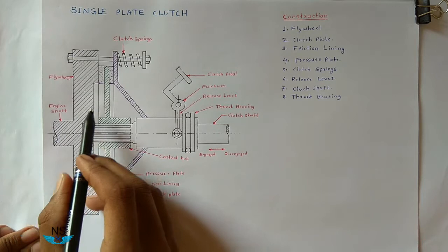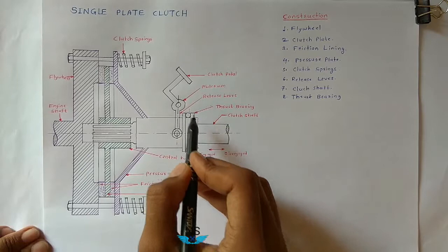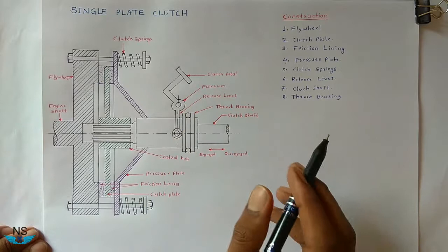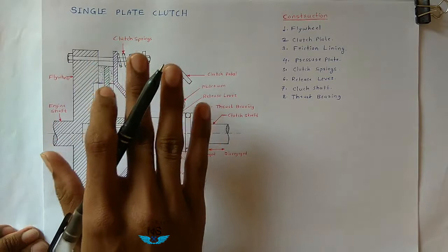So the main parts are: flywheel, clutch plate, friction lining, pressure plate, clutch springs, release lever, clutch shaft, thrust bearing, and the clutch pedal — which is also a component used by the driver to apply force. This is the construction of single plate clutch.